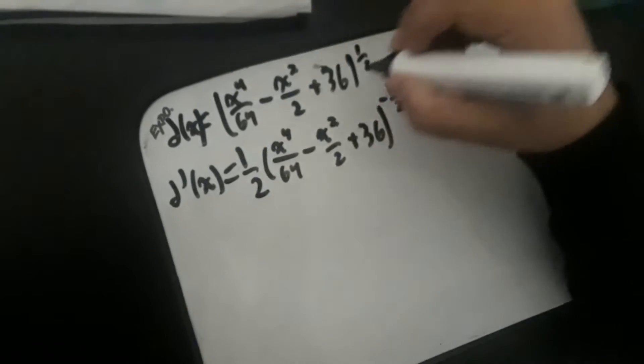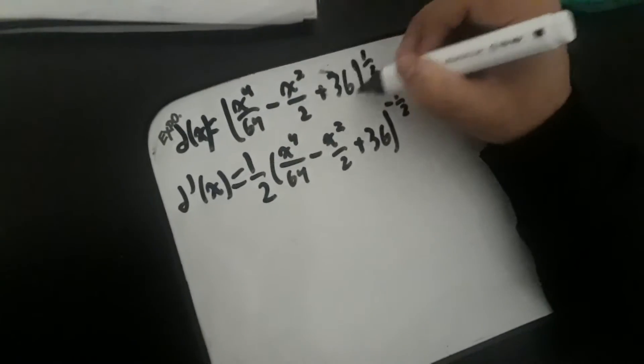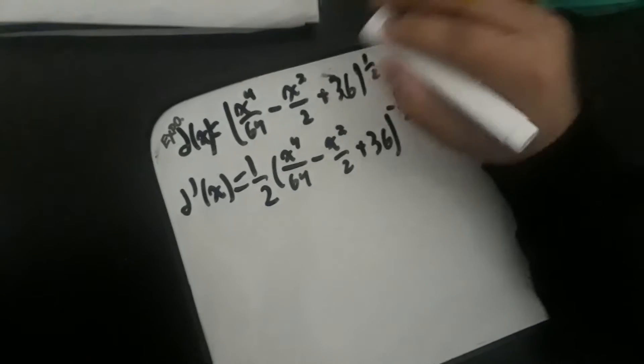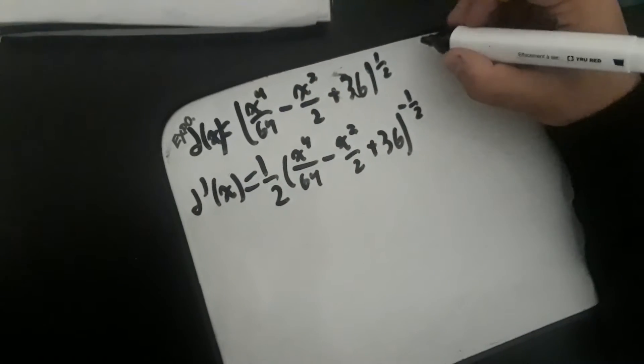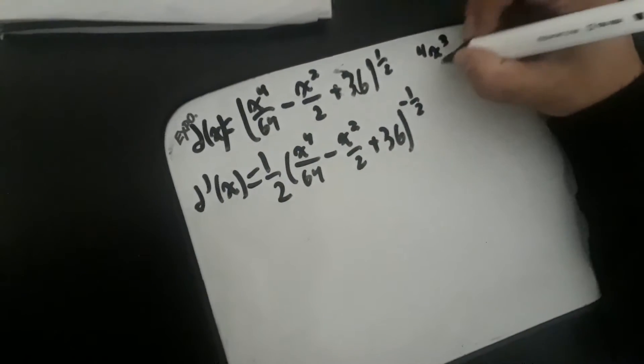Because the 36 doesn't have an x, the derivative of this would be 0, so we can just leave that. The x to the 4 over 64 becomes 4x cubed over 64, which simplifies to x cubed over 16.